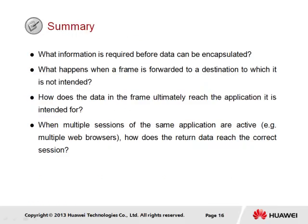In summary for this section, the first question asks: what information is required before data can be encapsulated? Prior to encapsulation, the source must be aware of a valid path that can be taken by IP in order to reach the intended destination. In addition, the forwarding address must be resolved to a physical next hop, which is often discovered through ARP.